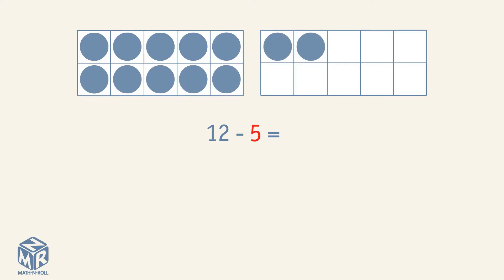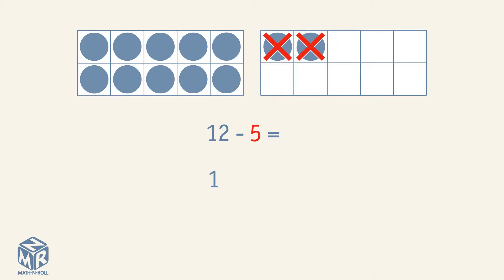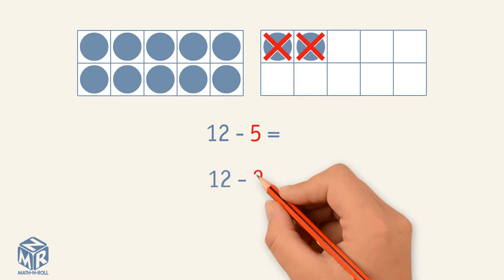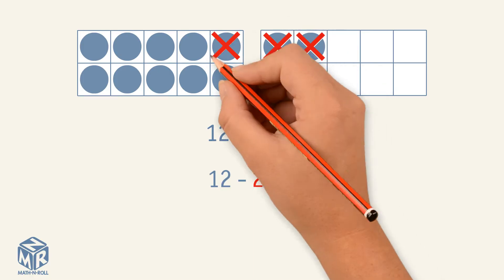How many do you subtract to get to 10? We subtract 2 to get to 10. How many more to subtract 5? We subtract 3 more.